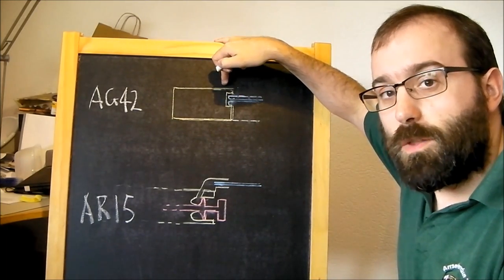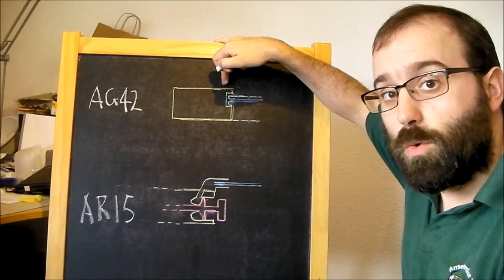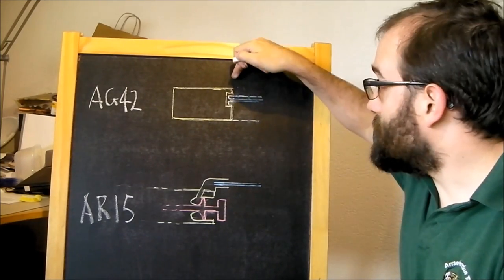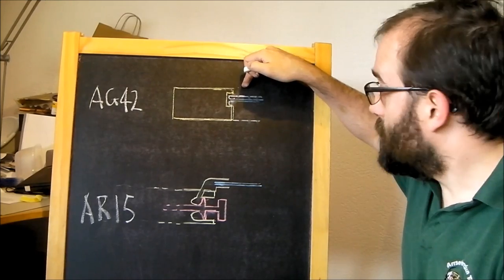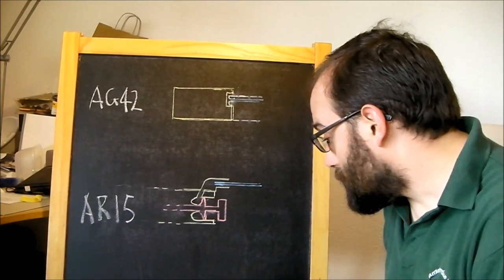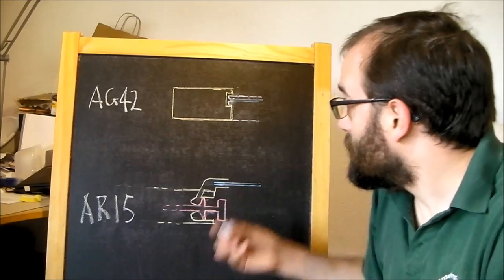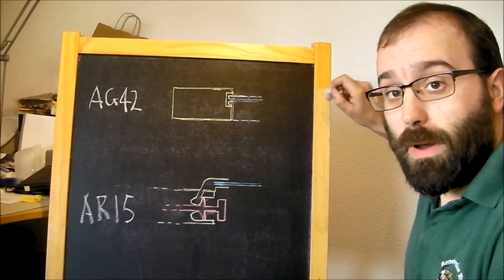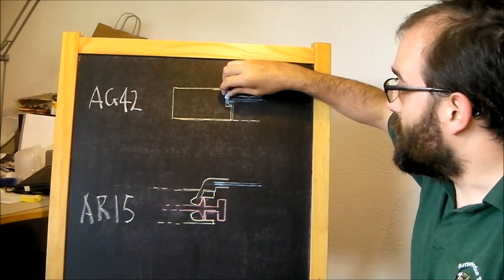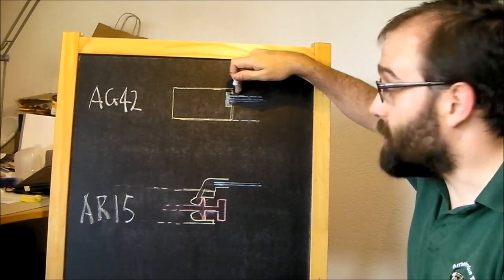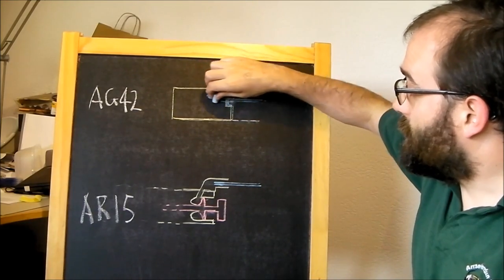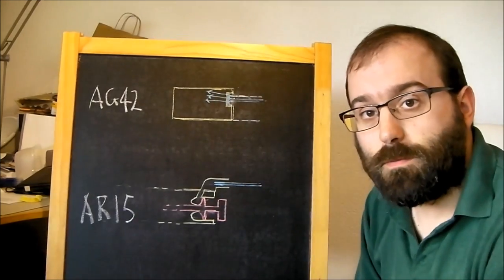In the top of the carrier and the position where an operating rod would normally hit the carrier to operate the action, there's a cylindrical cavity that fits over the end of this cylindrical fixed piston effectively. Now what happens is, gas is tapped off the barrel somewhere up here, flows down the tube, flows into the gap between the fixed piston on the receiver and the cylinder on the bolt carrier, expands, pushes the bolt carrier backwards, cycles. Simple.